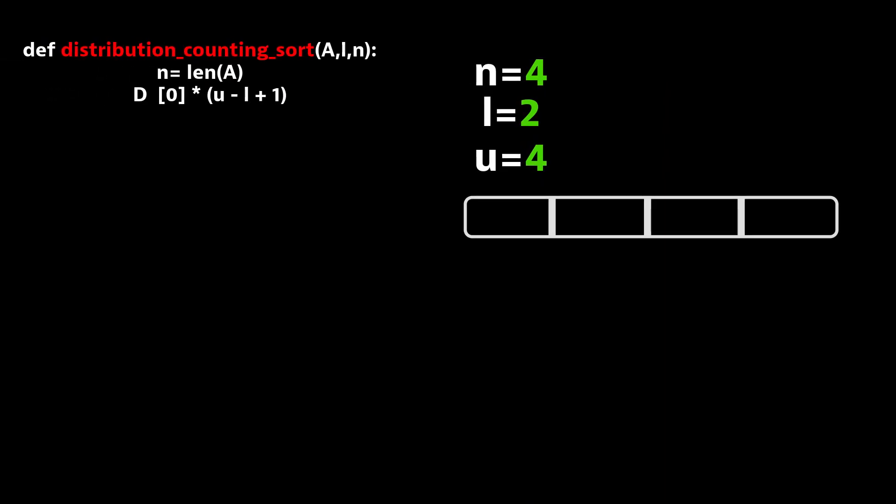Now let's discuss the code. As you can see here, we have three variables: n, which is the length of the array; l, which is the lower bound; and u, which is the upper bound.